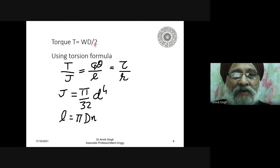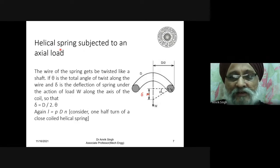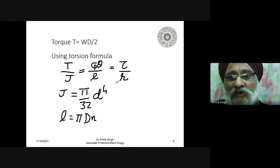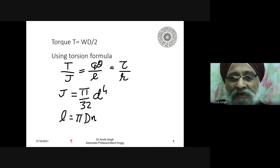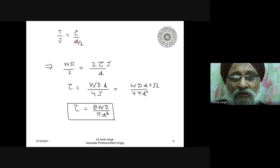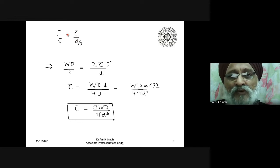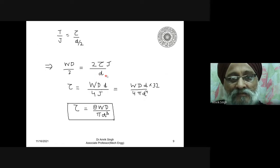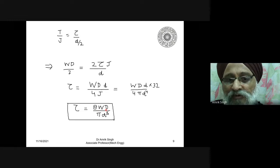To revise: the torque in this case is equal to the axial load multiplied by D/2. Using the torsion formula, J is equal to pi/32 times D⁴, and L is equal to pi·D·N. Putting in the value of T and bringing J to this side, R will be D/2 where D is the diameter of the spring wire. So you can find the shear stress as 8WD upon pi·D³.